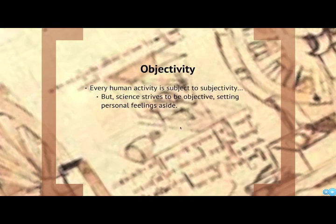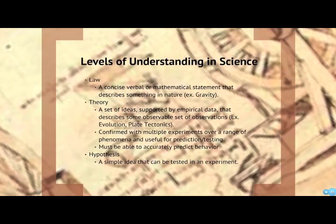So we're looking for objectivity, not subjectivity. We want to get rid of bias. Within science we also have levels of understanding. Hypotheses are just simple ideas we toss out — not really a big deal. Theories in science are much bigger than just the word 'theory' we throw out all the time. Theories in science are sets of ideas supported by empirical data that describe some observable set of phenomena, confirmed with multiple experiments over a range of phenomena, and useful for prediction and testing. That's why evolution doesn't get thrown out by scientists — it's too well supported and has essentially become law in the minds of 95% of scientists.